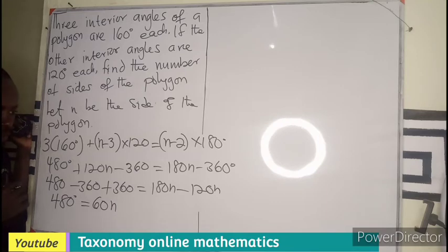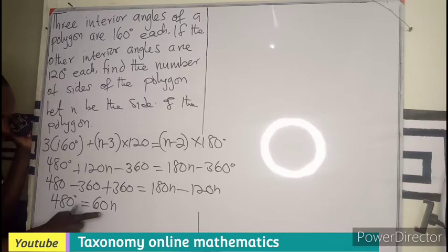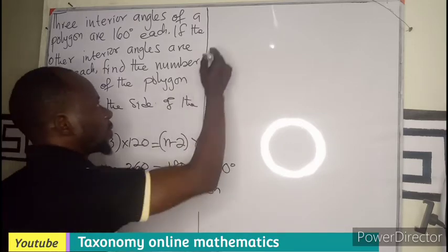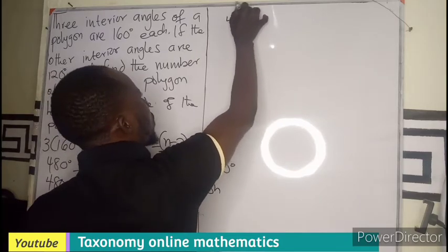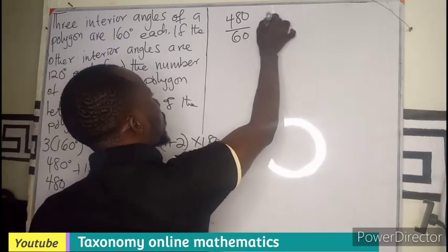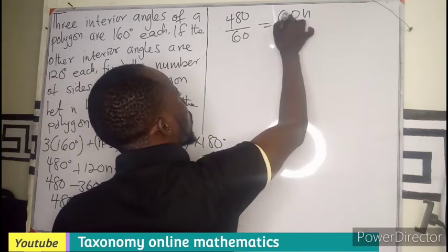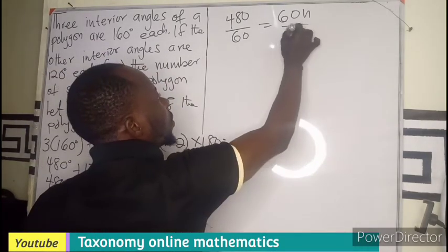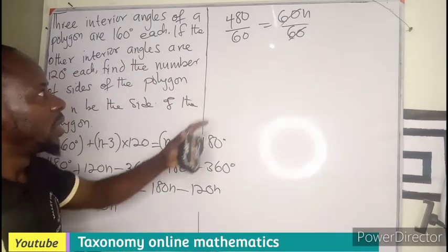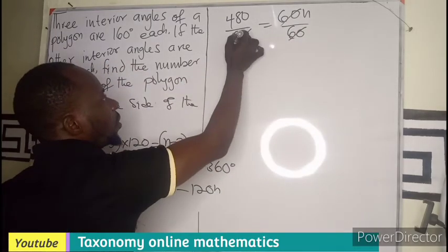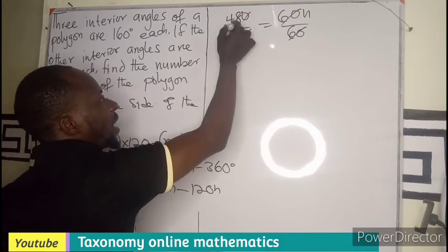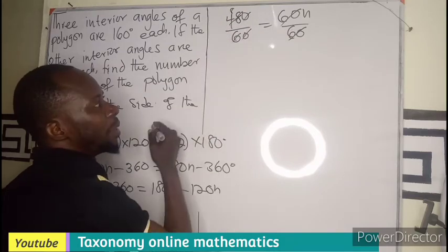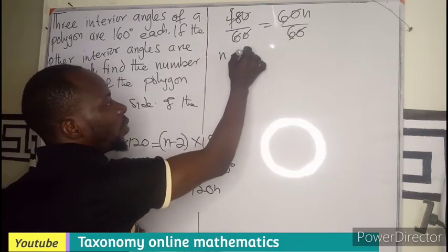I believe you are getting the concept. What do we do? We look for N. We divide by the coefficient. The 60 will cancel. We are going to have this go here. How many times? 8 times. So N is going to be 8.